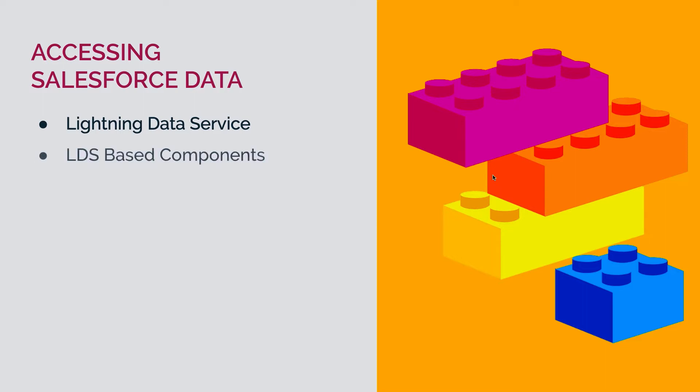The second approach would be using some of the base components which are based on Lightning Data Service. These base components will be a great help when you want to create forms on the UI to allow your user to create new records, or when your user wants to view or edit existing records in Salesforce. The third approach would be using Apex methods annotated with the @AuraEnabled annotation. These methods help you write complex logic which cannot be served with Lightning Data Service or the base components. Let's have a look at all three approaches one by one.